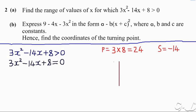The sum is that value in the middle, which is negative 14. So the product is 24. Let's find the factors of 24: 1, 2, 3, 4, and so on. We need to find two numbers whereby when you multiply them it gives 24, and when you add them it gives negative 14. The factor pairs are: 1 and 24, 2 and 12, 3 and 8, 4 and 6.